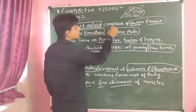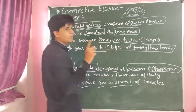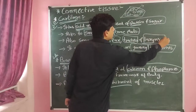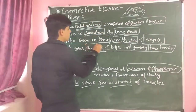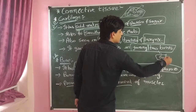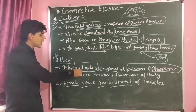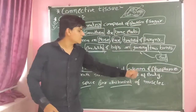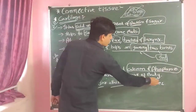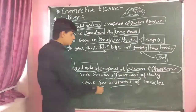Let's revise. Cartilage has a solid matrix composed of protein and sugar. It helps to smoothen the bone ends and is present at bone ends. It is also seen in the nose, ear, trachea, and larynx. It gives flexibility and helps in joining the bones. Bone has a hard matrix composed of calcium and phosphorus — do not confuse cartilage and bone. Bones make the structural framework of the body and provide space for attachment of muscles.